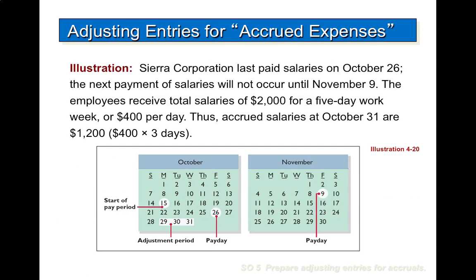Another illustration with Sierra Corporation: they last paid salaries on October 26. The next payment of salaries will not occur until November 9th. The employees receive total salaries of $2,000 for a five-day work week, or $400 per day. Thus accrued salaries at October 31 are $1,200 — $400 times 3 days — as you can see on the calendar.